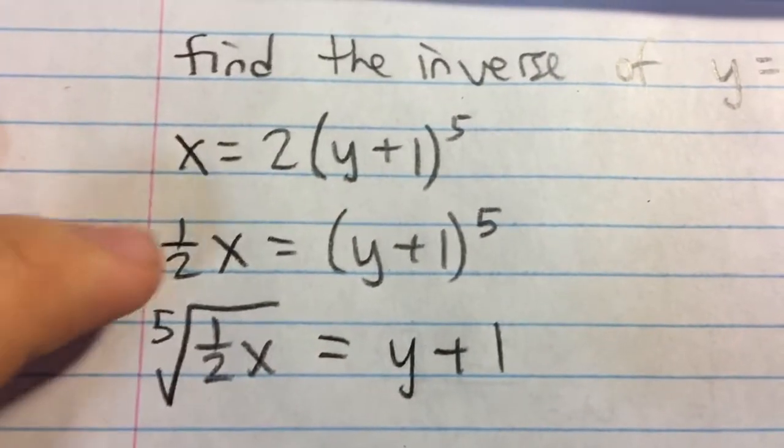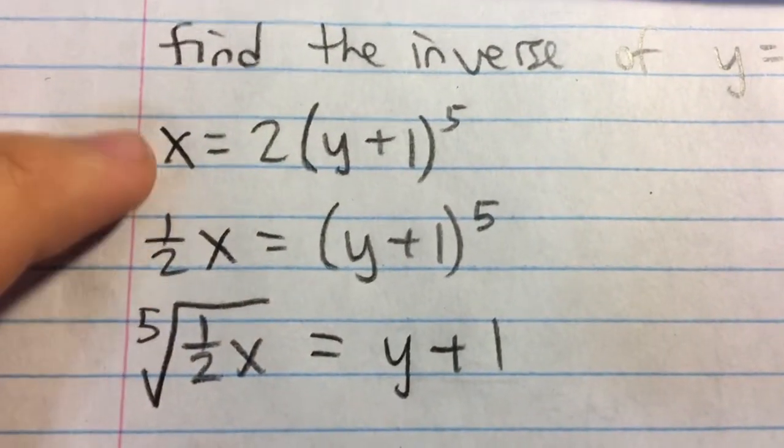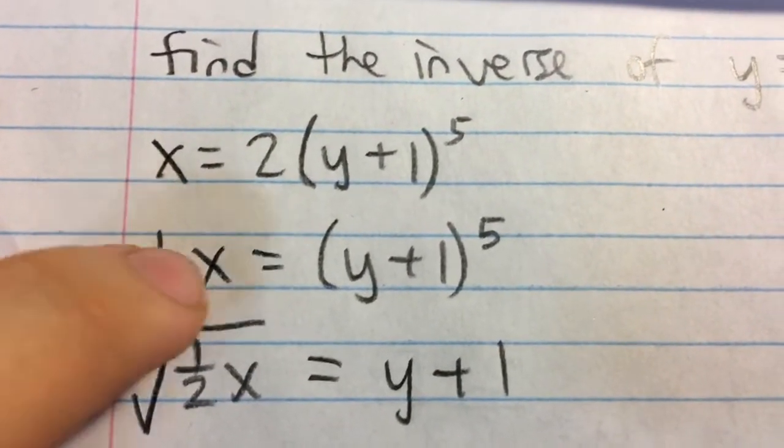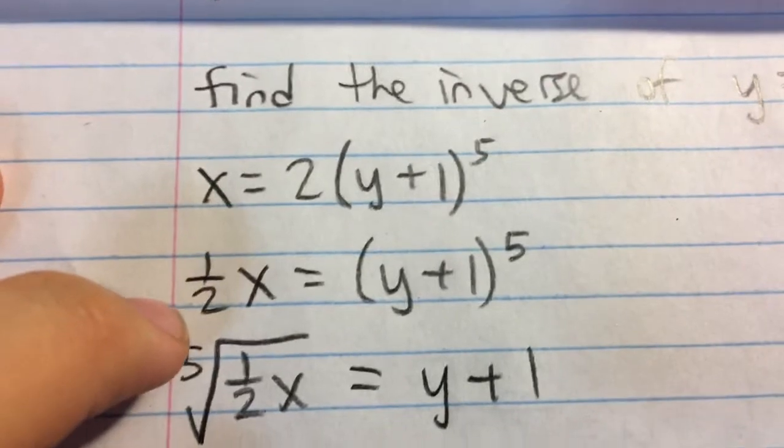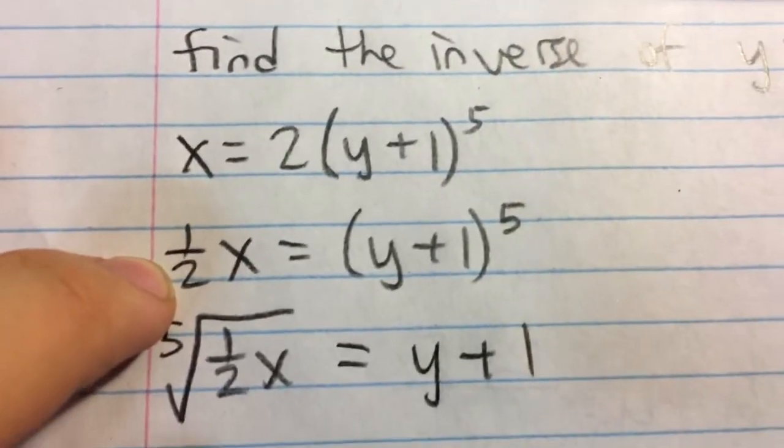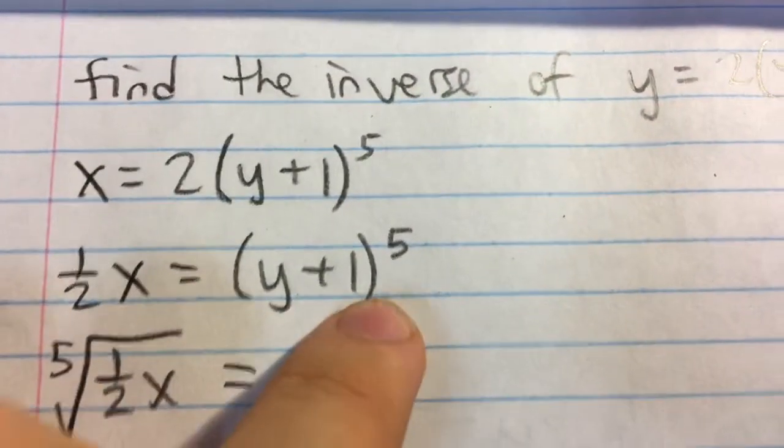First, we divide both sides by two. So on the left, I have one half x, or you can write this as x over two, either they're both equivalent. I have y plus one to the fifth.